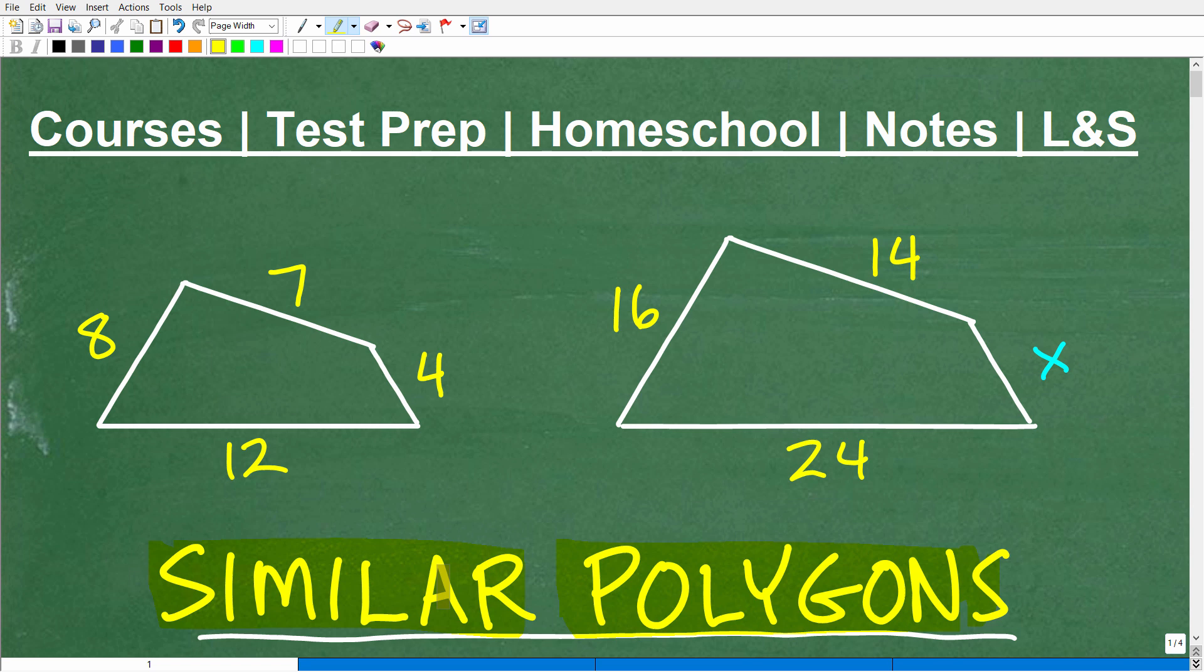We want to determine this length right here. We have all the lengths of this polygon except this one. If you think you can solve this problem, go ahead and put your answer in the comment section. I'm going to show you the correct answer in just one second, and then we're going to talk about what similar means, what a polygon is, and most importantly, how to solve this type of problem.